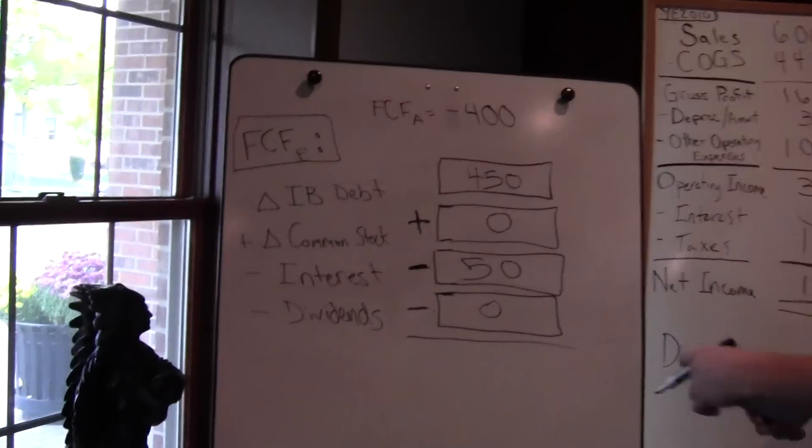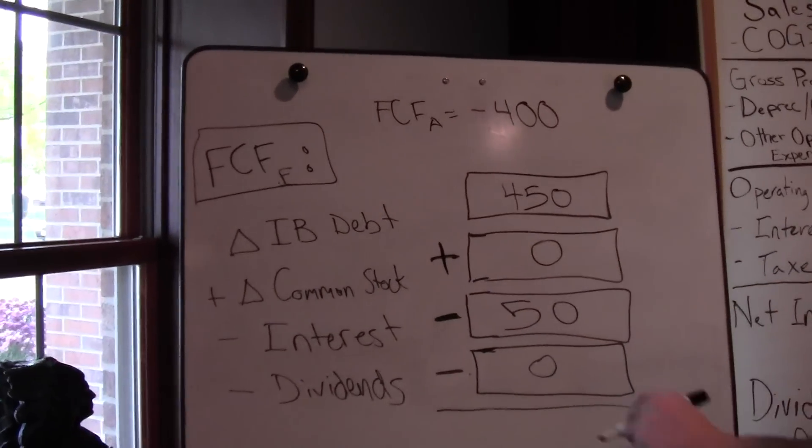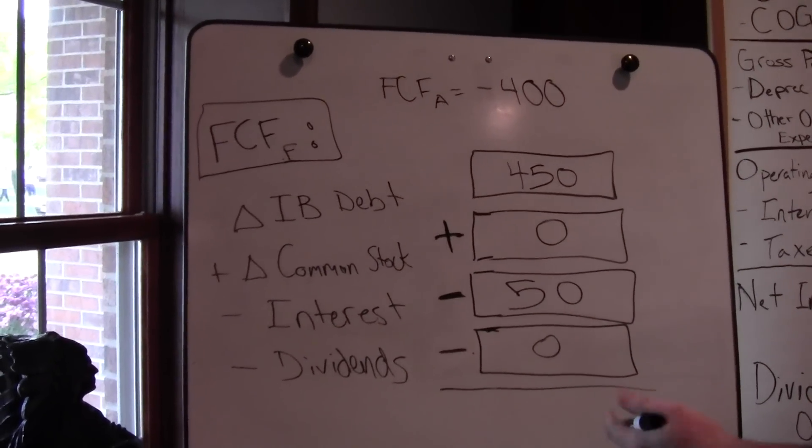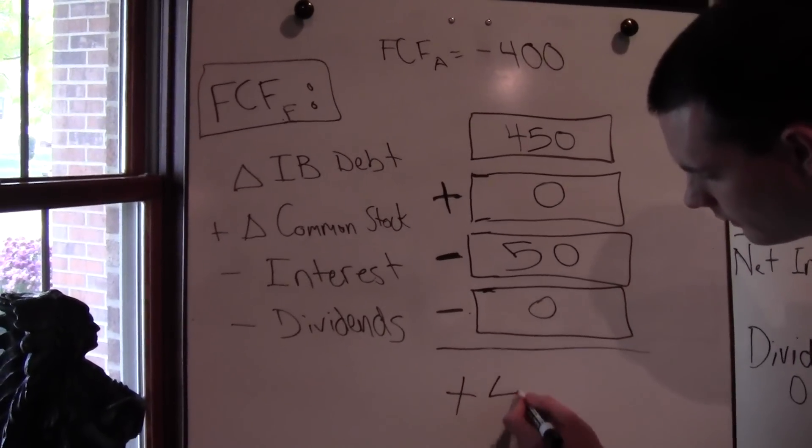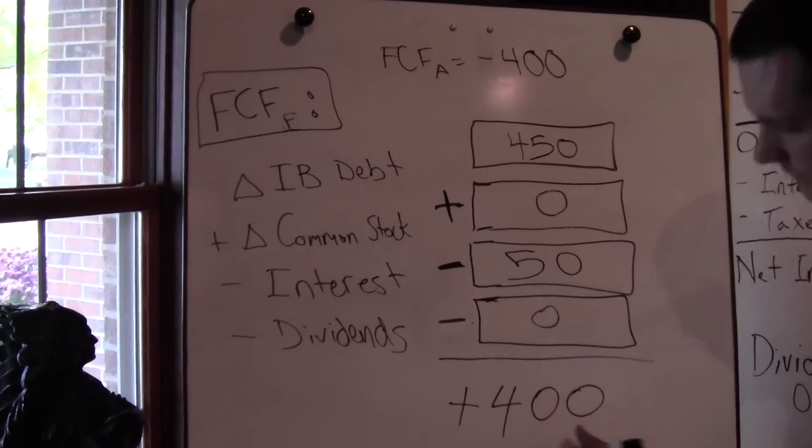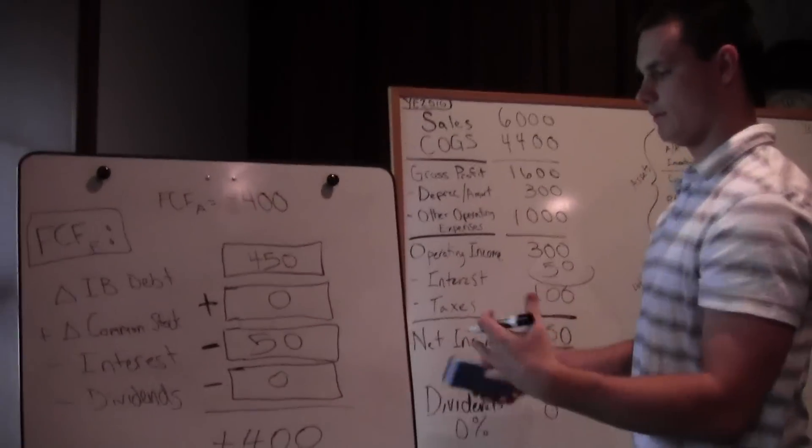Now we can plug and chug. $450 plus zero minus $50 equals $400, minus zero. So we have plus $400, which is exactly what we wanted, because we said it would be the reverse side.